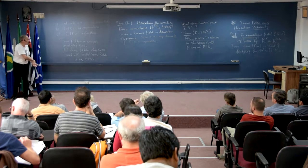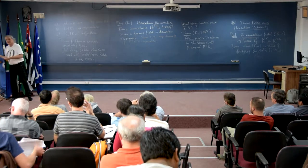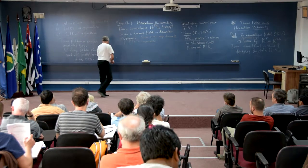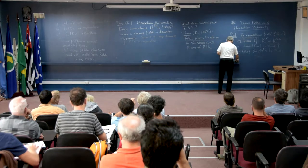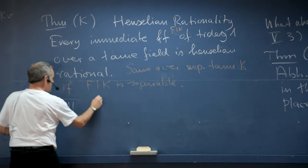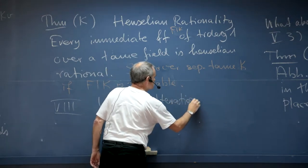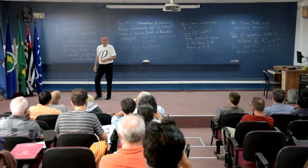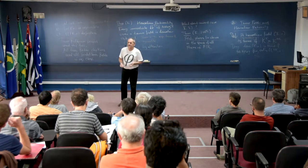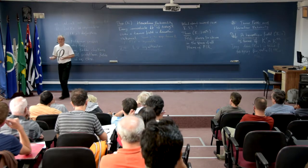Later, if I have enough time, I will come back to tame fields because they form a class with nice model theory, and actually representative for the model theory of all perfect valued fields. Now back to local uniformization. This is chapter eight: local uniformization by alteration. As indicated already in chapter five, for the mixed case we have to enlarge things, possibly the function field. This means we get local uniformization after a finite extension of the function field.